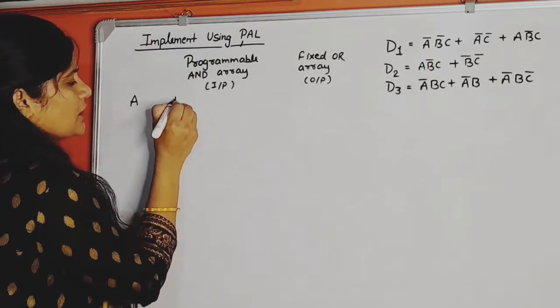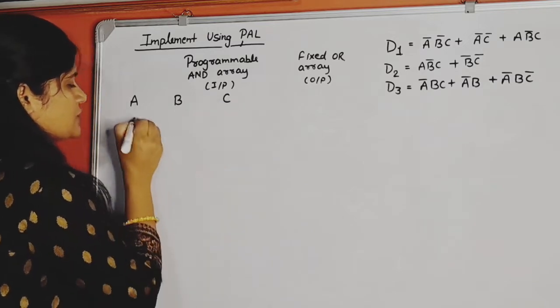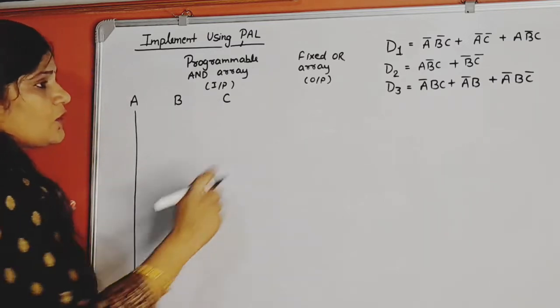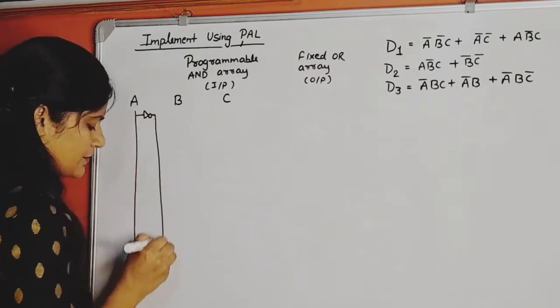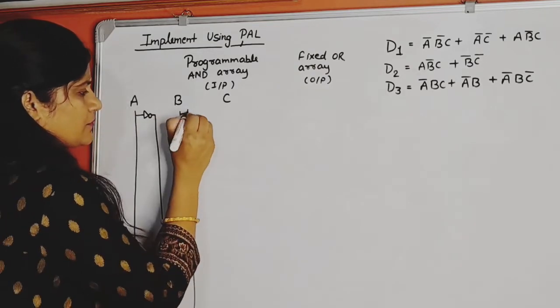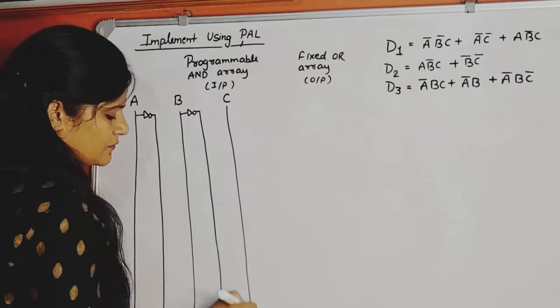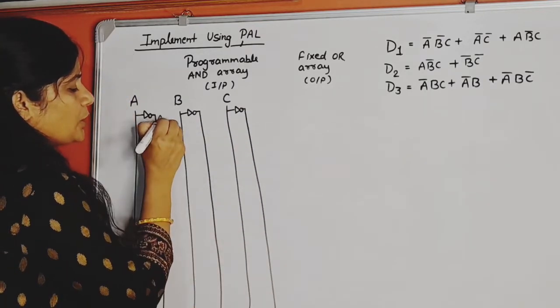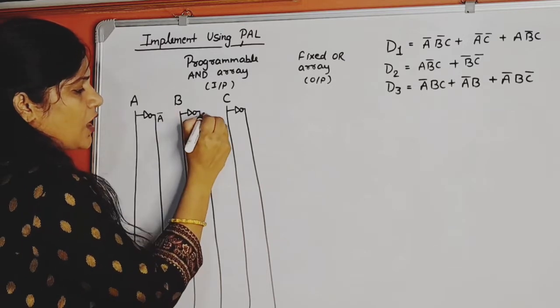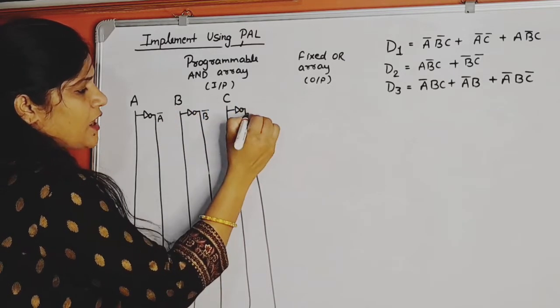So A, B, C are inputs. A is directly here, B here, and their complements also, meaning we will take through NOT gate. A through NOT gate, so we get output A̅. This is B, output of NOT gate is B̅. This is C, output of NOT gate will be C̅.